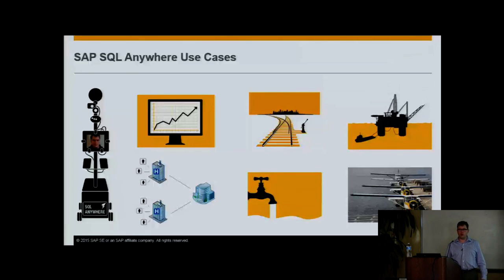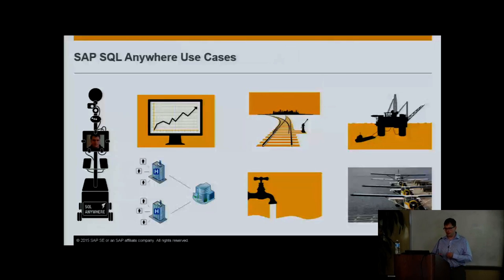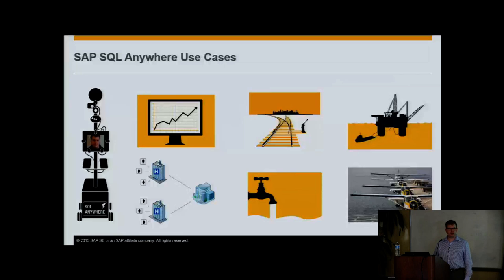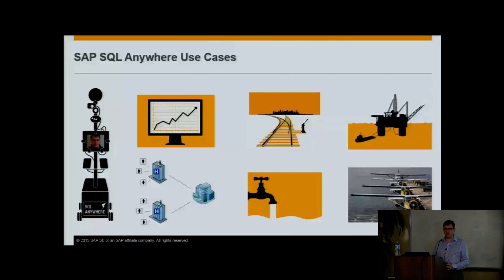SQL Anywhere is used by utilities like water companies to monitor for leakage. A lot of water companies lose much of the water they process through cracks and leaks in aqueducts, wasting money. Companies can drive around with a radio control on the truck to pick up data from a SQL Anywhere database running locally at these installations, helping figure out where water is being wasted.